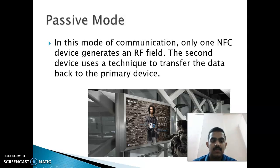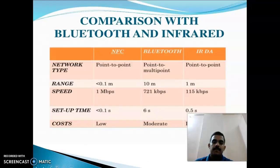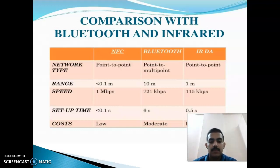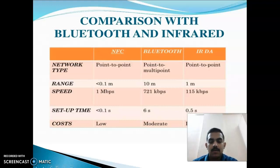Now, comparing NFC with Bluetooth and infrared: in terms of network type, NFC is point-to-point, Bluetooth supports multi-point connections, and IR is point-to-point. For range, NFC has a very short range of less than 0.1 meter, whereas Bluetooth ranges up to 10 meters and IR up to 1 meter. However, the main advantage of NFC is that it has a higher data speed of 1 Mbps, and its setup time and cost are much lower than Bluetooth and IR.